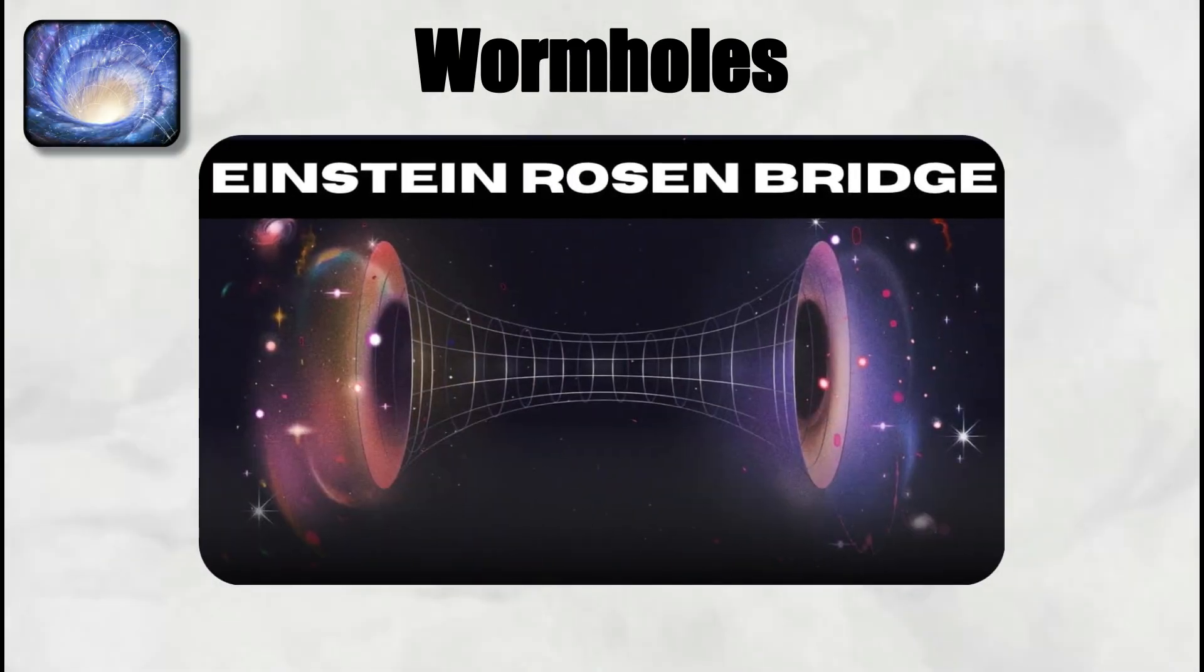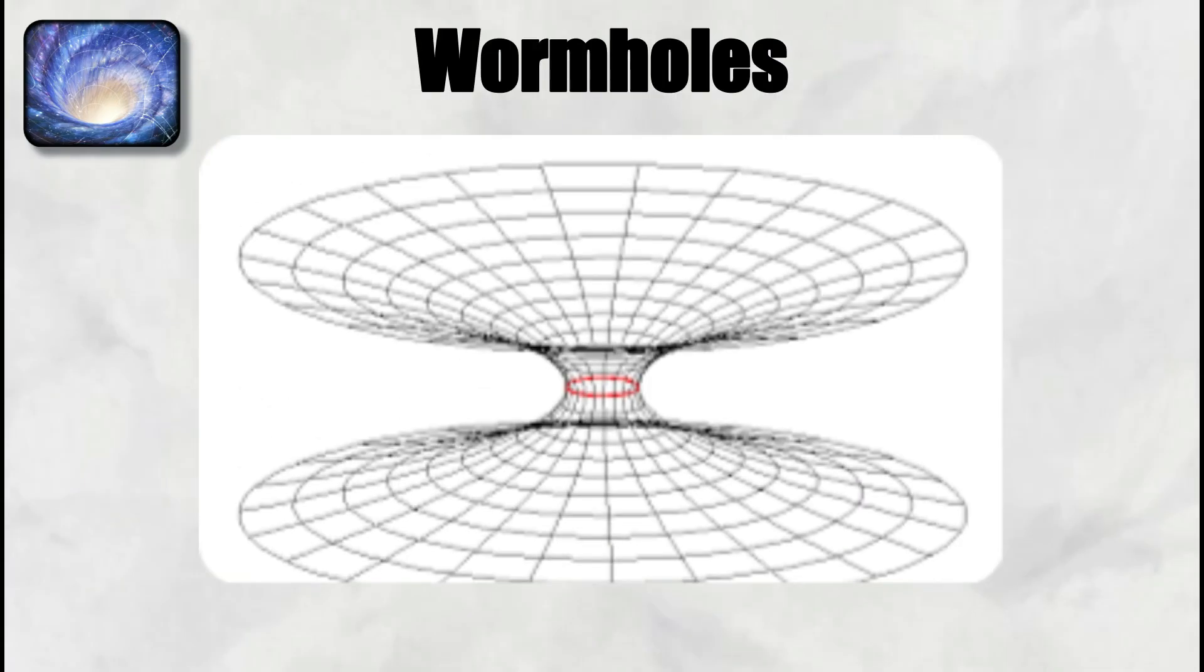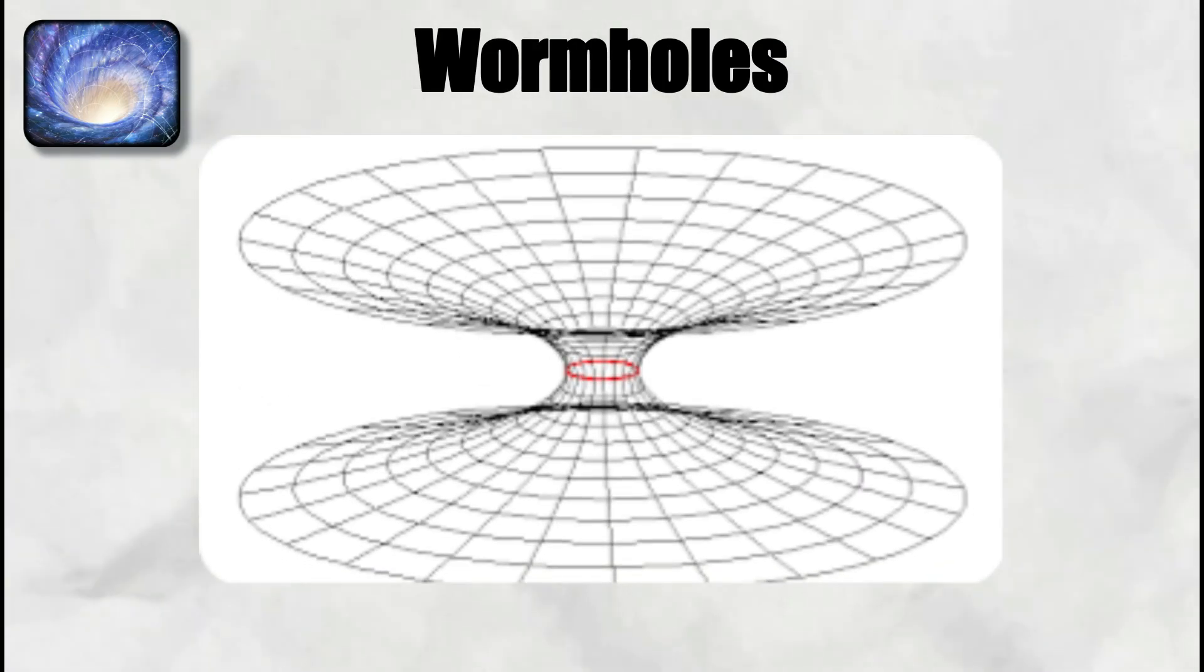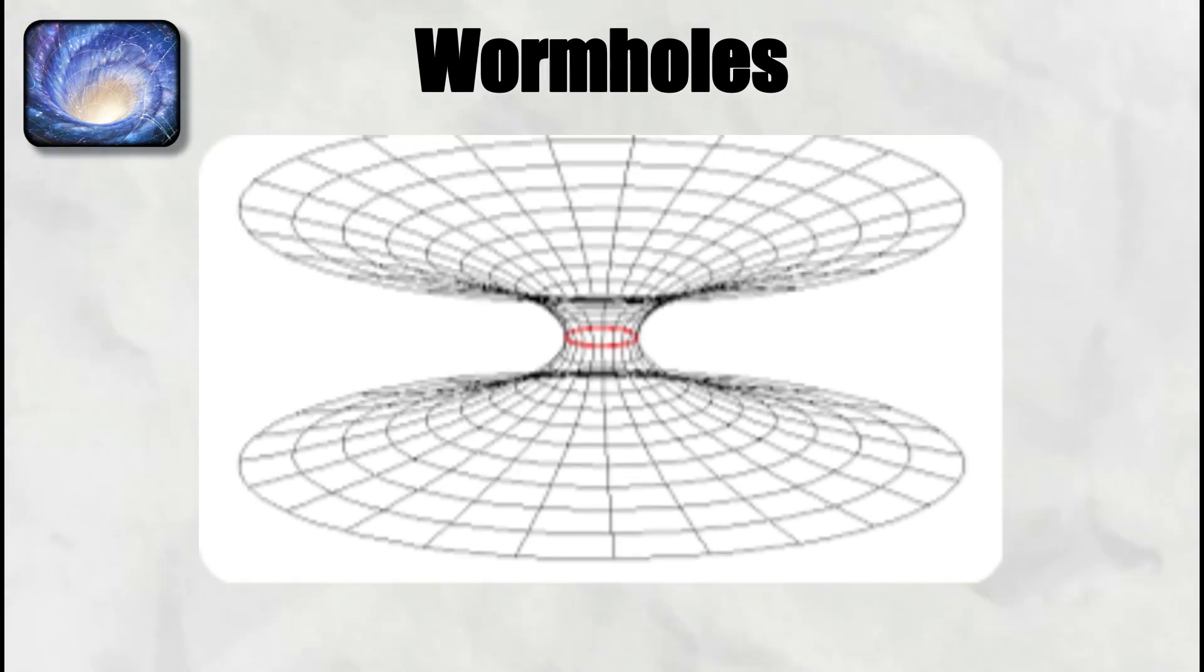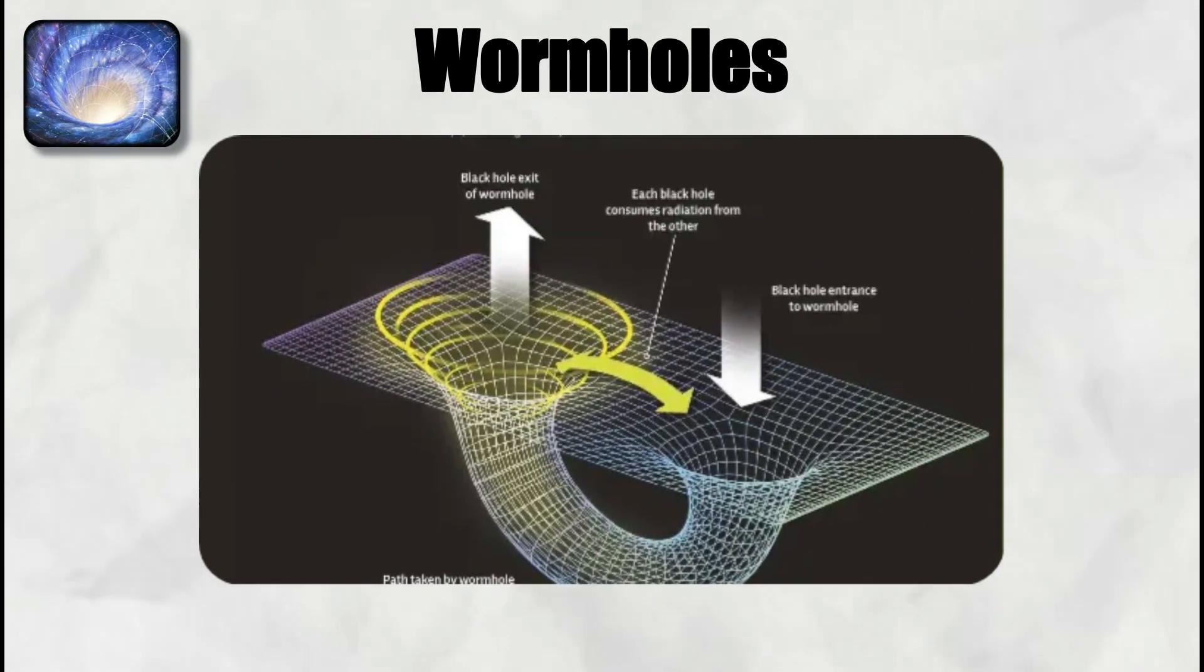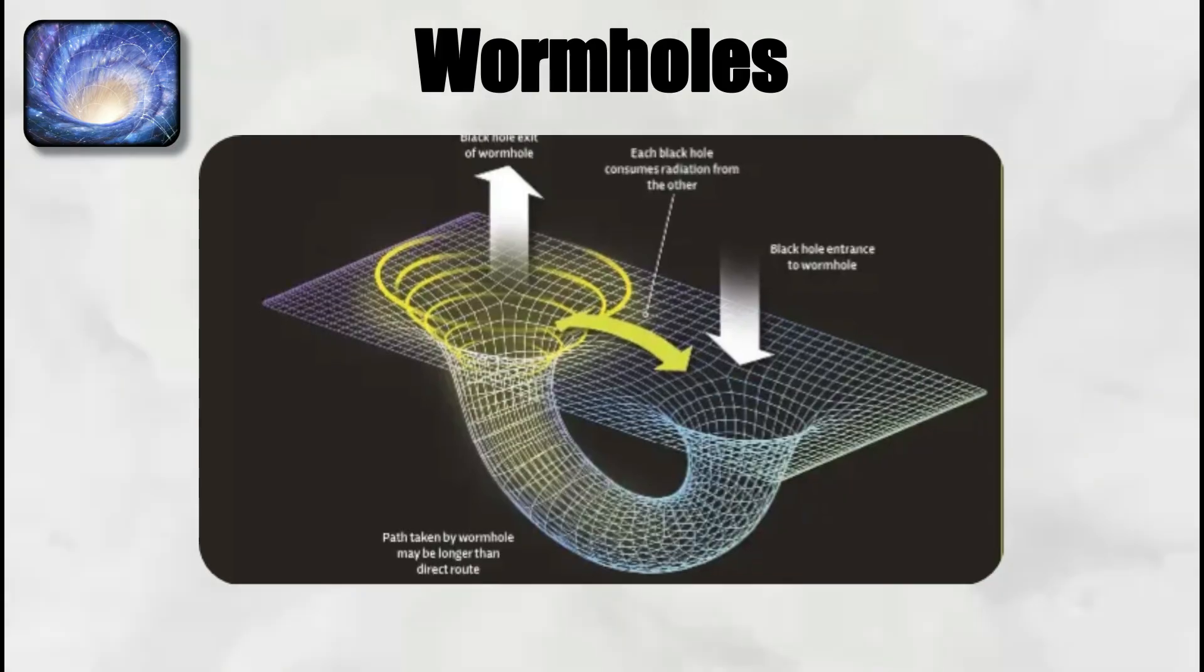The Einstein-Rosen bridge solution is not traversable in its original form. The throat connecting the two ends pinches off too quick for any light or matter to pass through from one side to the other. This is because the geometry is unstable. The connection closes faster than signals can travel.